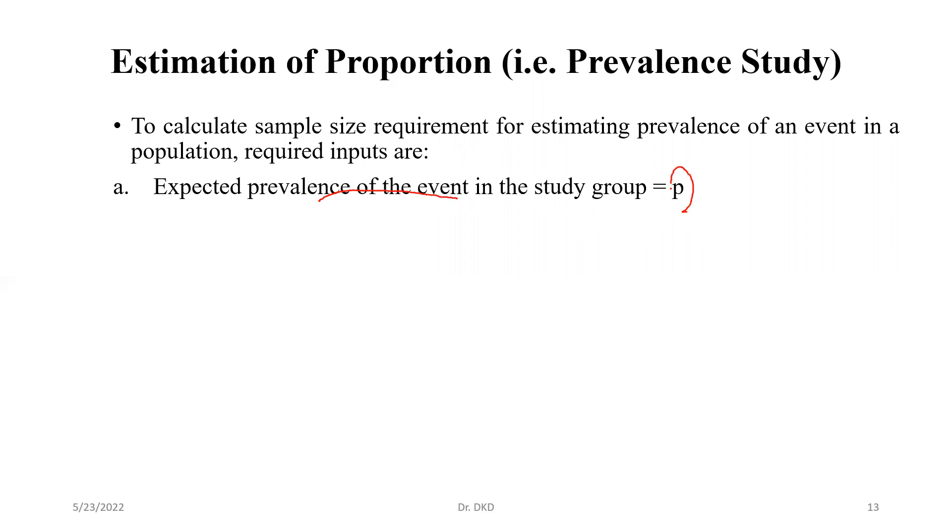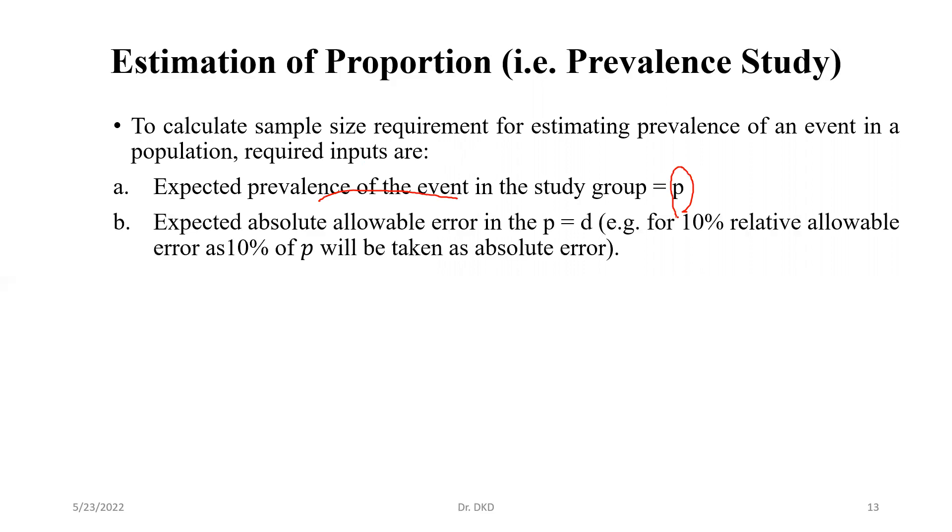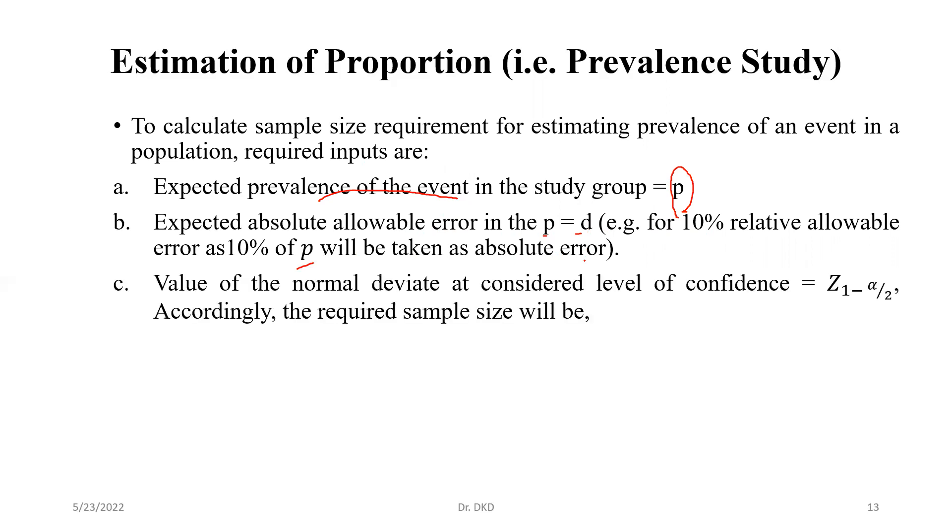If proportion or prevalence is reported for the study group and expected absolute allowable error in the P equals D, for example, 10% relative allowable error as 10% of P will be taken as absolute error. Value of the normal deviate at considered level of confidence Z1 minus alpha by 2. So if these inputs are given, then the required sample size can be calculated.